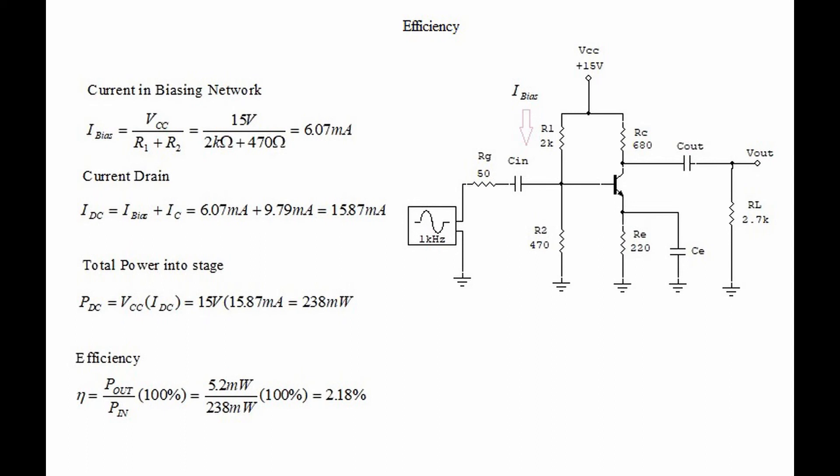So in this case it's 15 volts divided by 2k plus 470 ohms which equals 6.07 milliamps. The current drain is called IDC and it includes current in the bias network plus collector current. So in this case it's 15.87 milliamps.